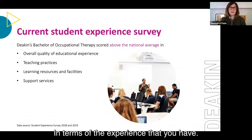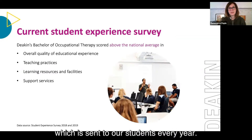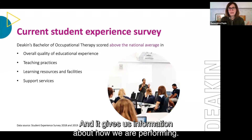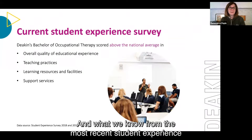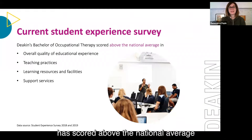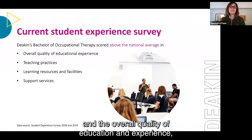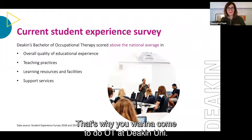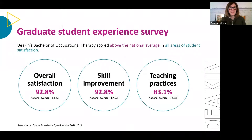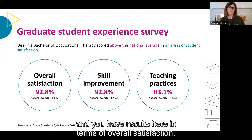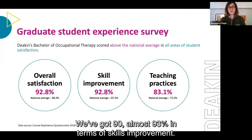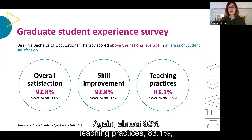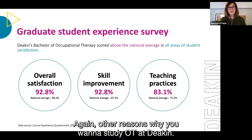The Student Experience Survey tells us how we're performing. From the most recent survey, Deakin OT has scored above the national average in overall quality of educational experience, teaching practices, learning resources and facilities, and support services. From a graduate perspective, overall satisfaction is almost 93%, skills improvement is almost 93%, and teaching practices are 83.1% — all above the national average.